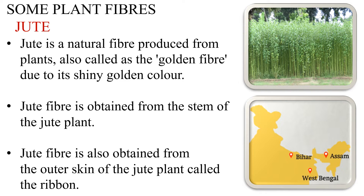Jute fiber is a soft and long natural fiber. As it has a golden and silky shine, it is also called the golden fiber. Jute plants are grown mainly in the fields of Bihar, Assam, and West Bengal. Jute fibers are obtained from the stem of jute plants, and also from the outer skin of the jute plant called ribbon.